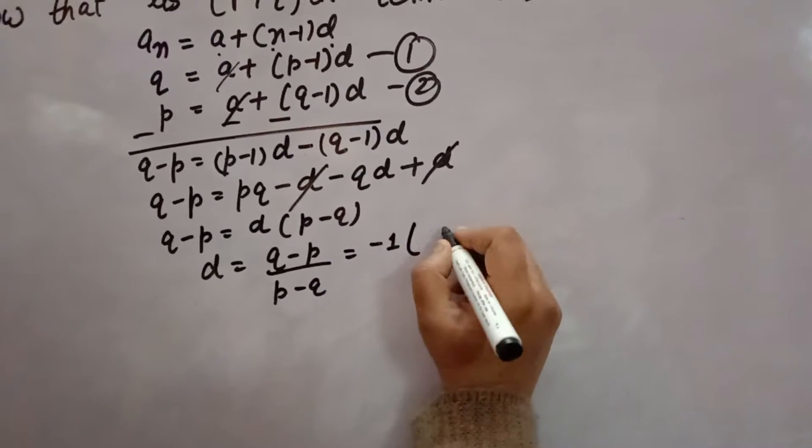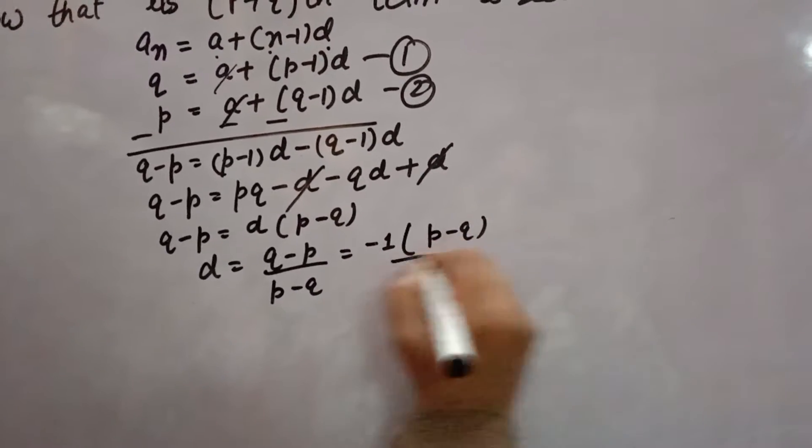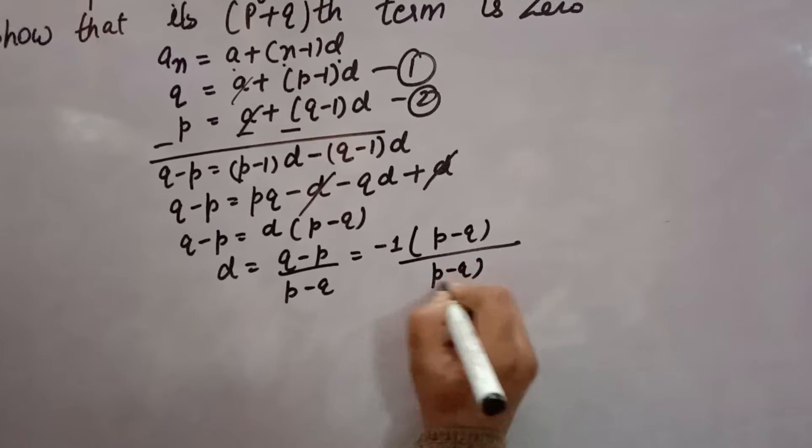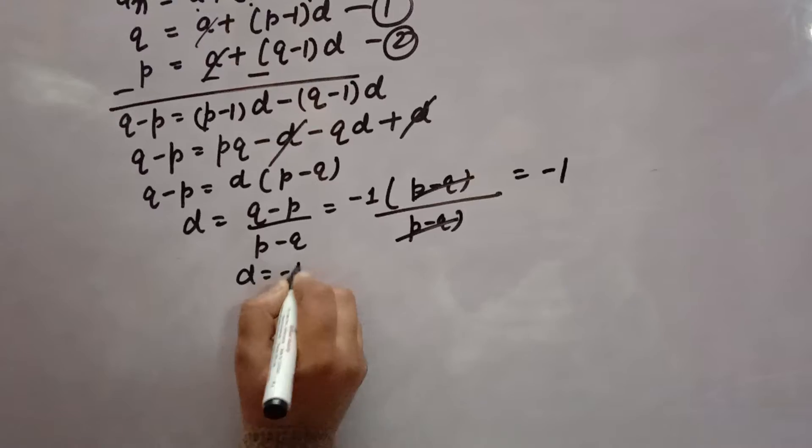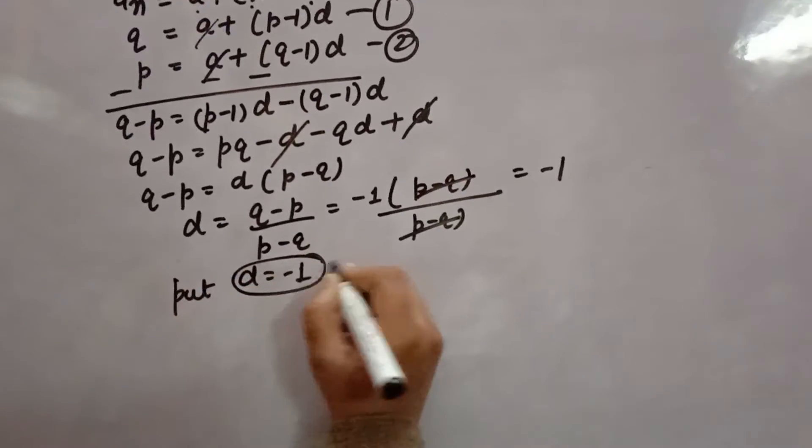So D = (Q - P)/(p - q). The values are the same but signs are opposite, so we can take -1 common. (p - q) cancels, giving D = -1.